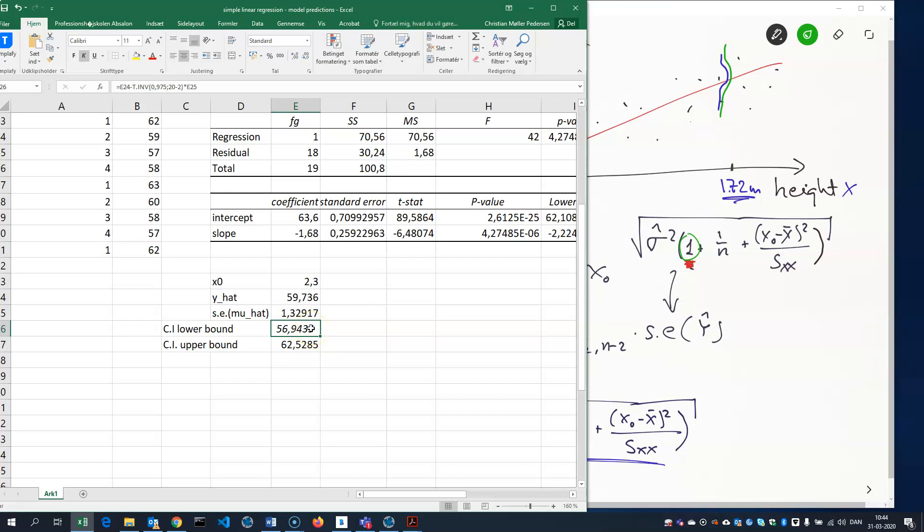And you see immediately that changed the interval quite a bit. Now we can only say that with 95% confidence, the yield will be between 56 and 62, roughly 57 maybe, and 62.5. So the prediction interval is quite a lot wider than the confidence interval for the mean. And of course, I should change this to prediction interval here. But calculated in much the same way. So, OK.